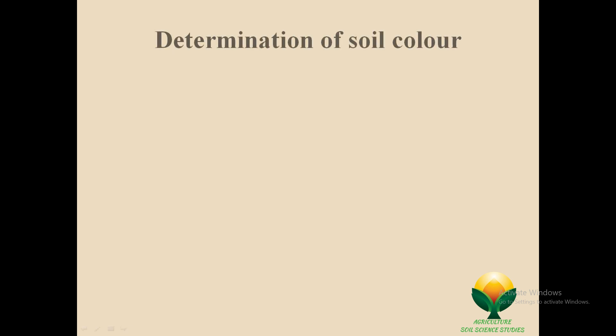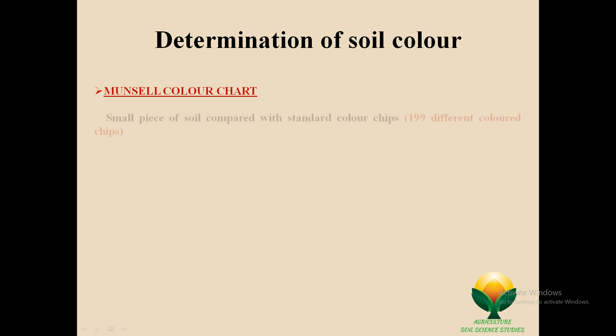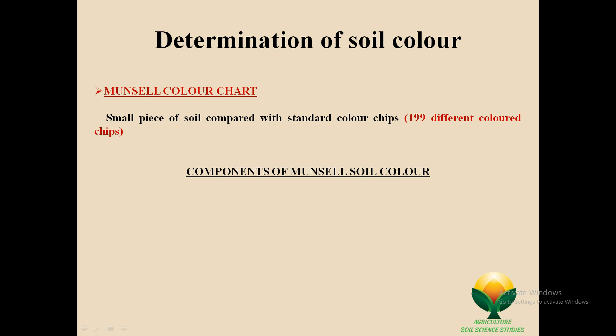Now, how do we determine soil color? We use the Munsell color chart. The Munsell color chart has small pieces of color chips. We take our soil sample and compare it with those standard chips. The Munsell color chart is a small booklet containing 199 different colored chips.